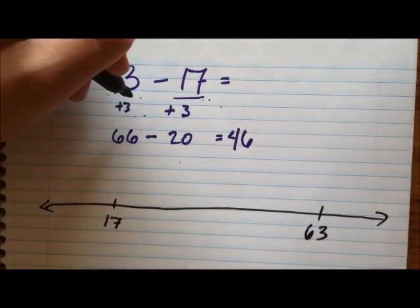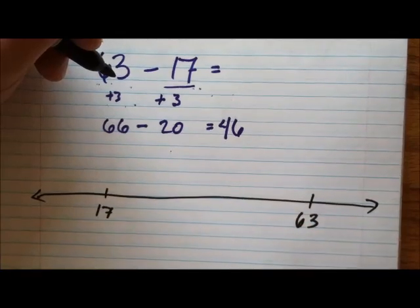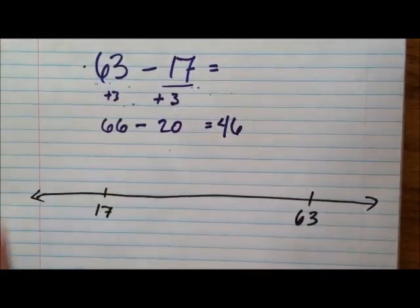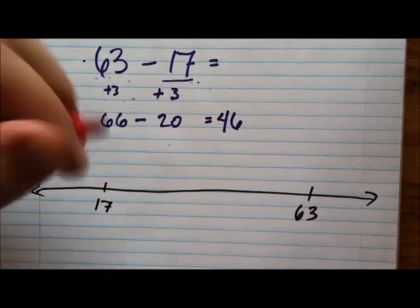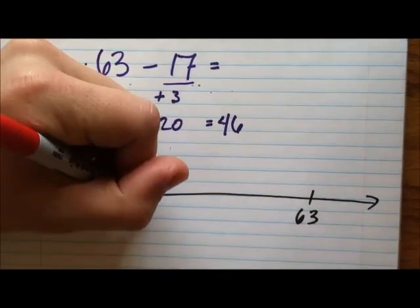It really doesn't matter how I think about this. All I'm trying to figure out is the difference between these two numbers. So again, what this looks like on the number line is I'm changing 17 into 20. So I've got a different pen here. We go 1, 2, 3. Now we're at 20.